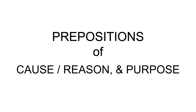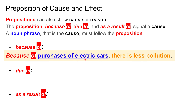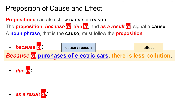Moving on, let's talk about prepositions of cause, reason, and purpose. Prepositions can also show a cause or reason. The prepositions 'because of,' 'due to,' and 'as a result of' signal a cause. A noun phrase that is the cause must follow the preposition. For example: 'Because of purchases of electric cars' — this is the cause, and 'purchases of electric cars' is the noun phrase. The effect is 'there is less pollution.' So: 'Because of purchases of electric cars, there is less pollution.'